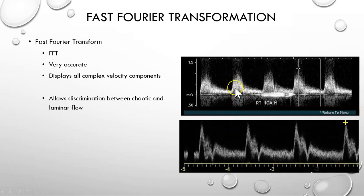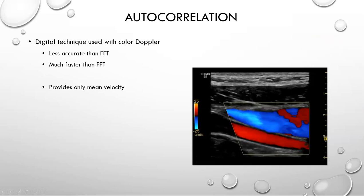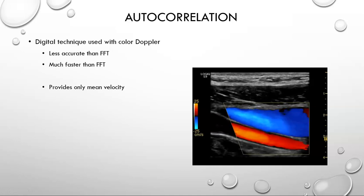FFT is very accurate and provides all complex velocity components, so we can see spectral broadening very well. In a normal laminar flow spectral display, during the systolic upstroke the velocity spectrum is very narrow — this is plug flow. When the heart relaxes, blood flow spreads out and we get wider velocity information characteristic of laminar flow. Above that, turbulent flow post-stenosis can be demonstrated. Autocorrelation is far less accurate than FFT but much faster, and provides only mean velocity information.